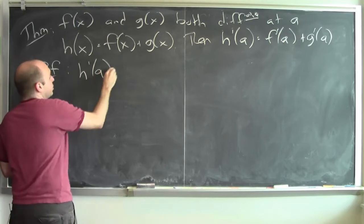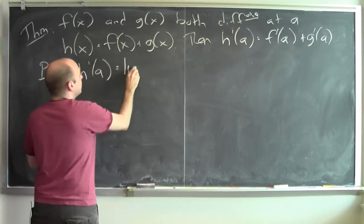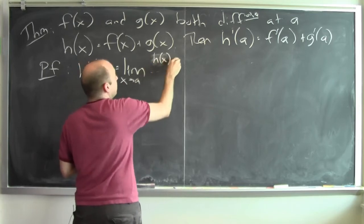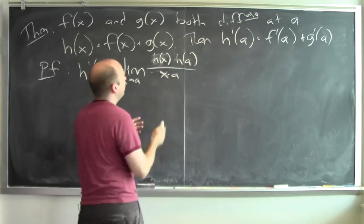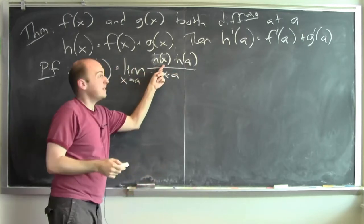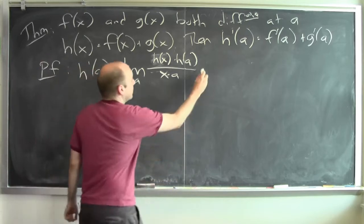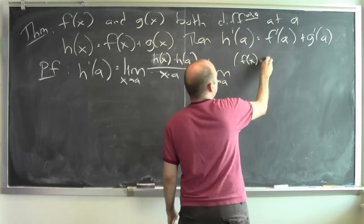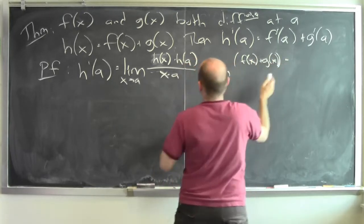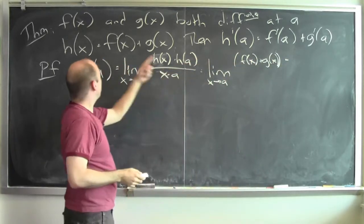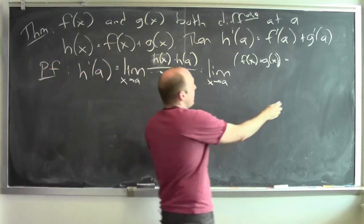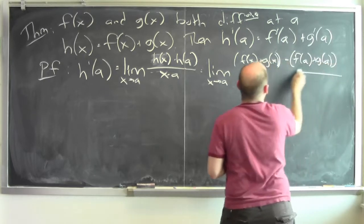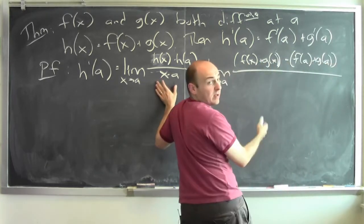The derivative of this function h at the point a is the limit as x goes to a of h of x minus h of a over x minus a. Now I know what h of x is — h of x is f of x plus g of x, so I can plug that in. This is the limit as x goes to a of f of x plus g of x, and h of a is f of a plus g of a, all divided by x minus a.